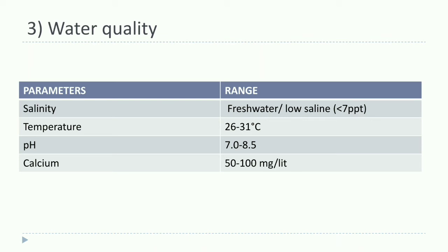Water quality parameters for freshwater prawn culture: salinity should be freshwater to low saline, less than 7 ppt; temperature should be 26 to 31 degrees Celsius; pH should be 7 to 8.5; and calcium should be 50 to 100 mg per liter.